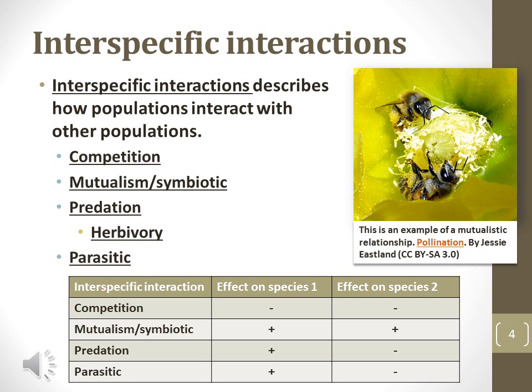Interspecific interactions describe the interactions between organisms of two different species. Species may compete for food or resources, or they may interact directly with each other through predation. The chart at the bottom explains how two species may be affected by different types of interactions.